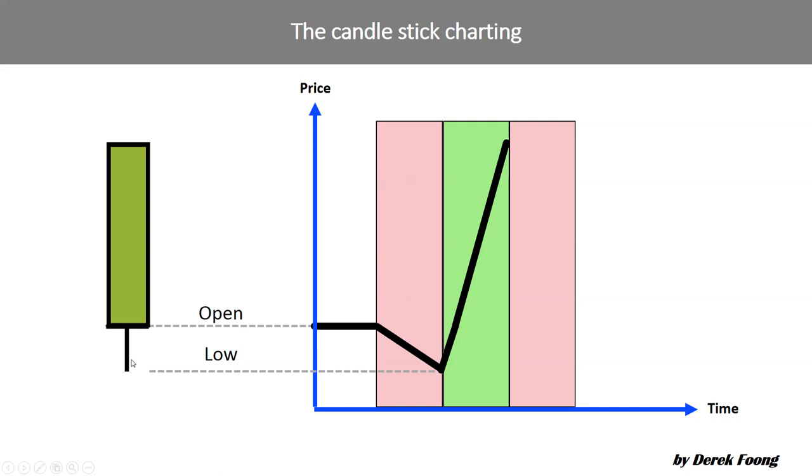As it moves up it leaves the shadow or wick behind, because price did not stay long over here. Price moves up and at this point of time there's no more interest in going up and price is anticipating to go down. This is where we call the high.